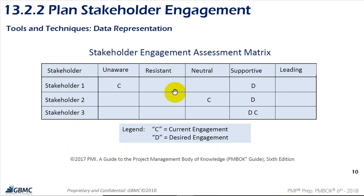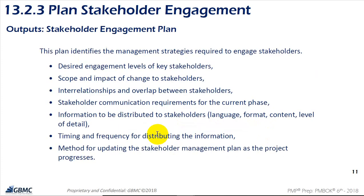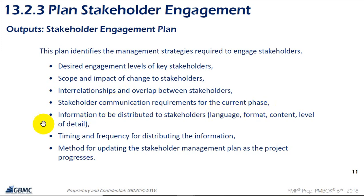The plan identifies where we want stakeholders to be — their desired engagement level — versus their current engagement level. It also covers the scope and impact of change on stakeholders, and the interrelationships and overlap between stakeholders. Sometimes stakeholders' requirements conflict, and both are important — so how do we resolve that?